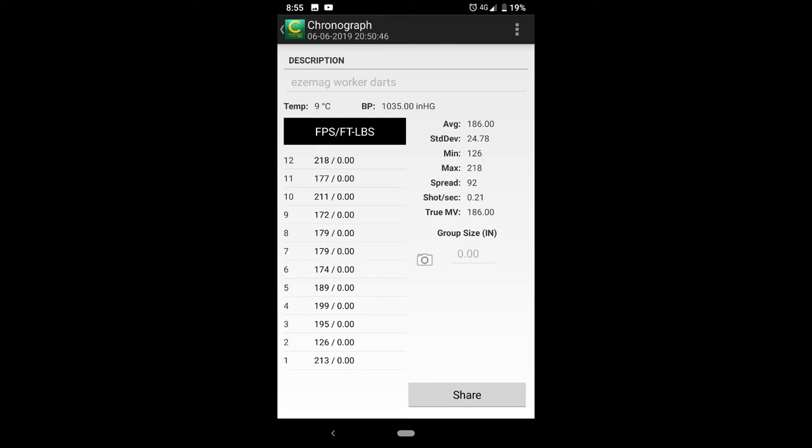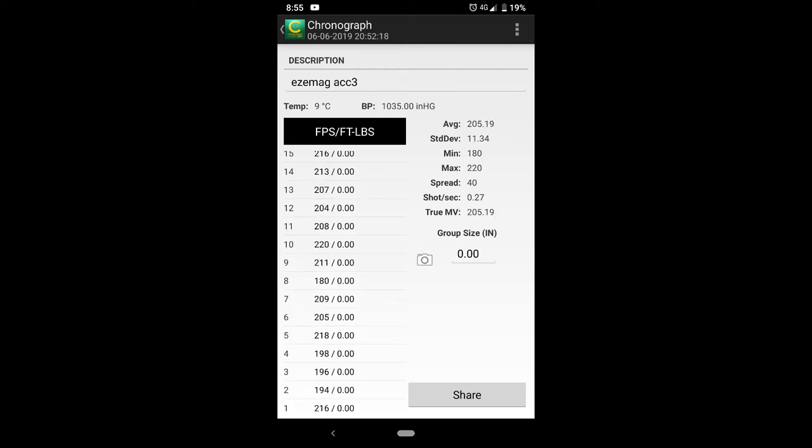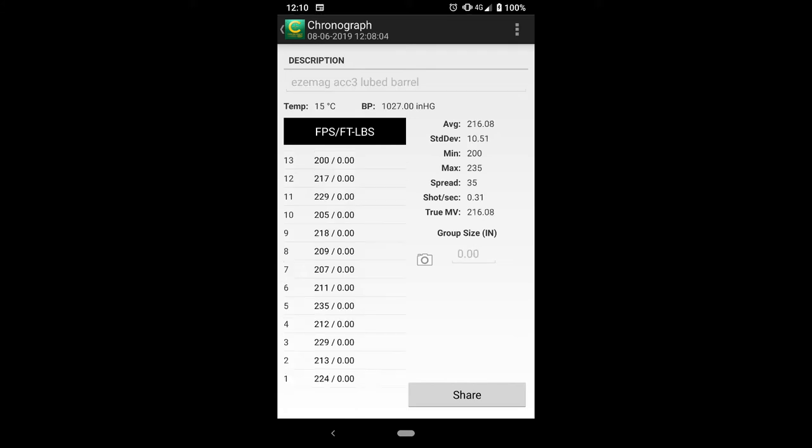And then in terms of obligatory FPS readings I got an average of 186 with worker darts. And to be expected the ACC3s did give a higher average of 205. On a suggestion by Ezekiel I lube the barrel with PTFE spray. And it did help to bump up the FPS reading a bit. I will need to actually do some further testing to see how far this is sustained. But he seemed to indicate that you basically just give a spray before each event that you play it.